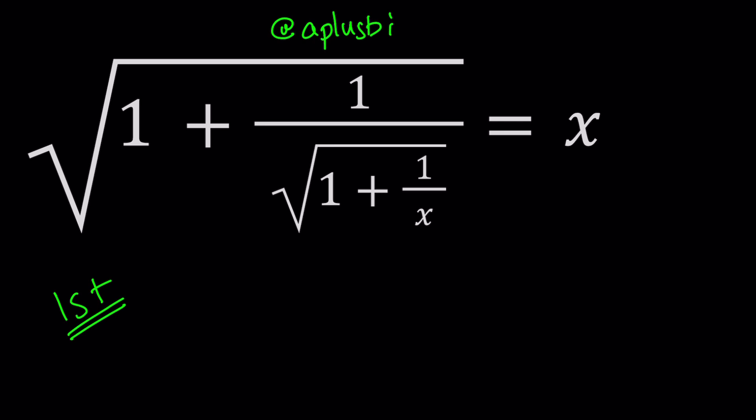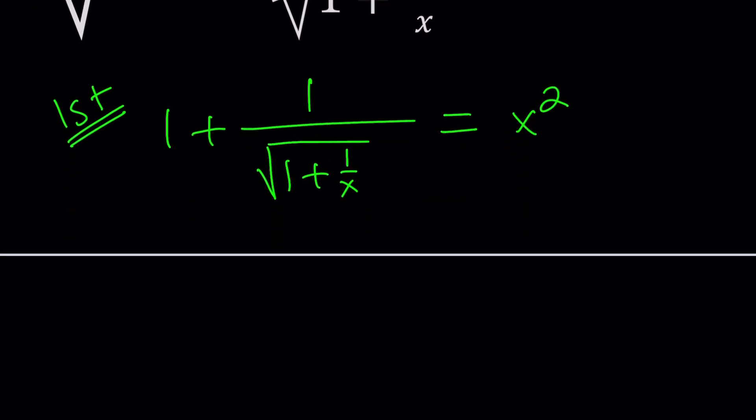The first method is basically going to be just getting rid of the radicals. If you square both sides, the outer radical is going to disappear because we have the square root of 1 plus 1 over the square root of 1 plus 1 over x and the whole thing equals x. If you square both sides, the outer radical is going to disappear and this left hand side is going to equal x squared. Our goal is getting rid of the radical one more time, but let's not do it right away because we have some stuff to simplify.